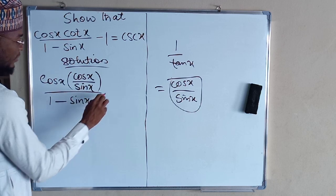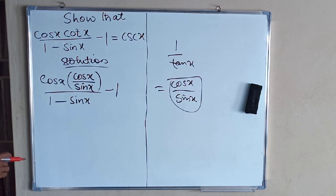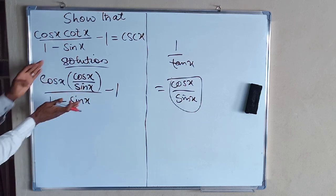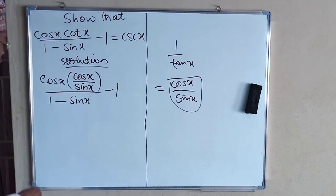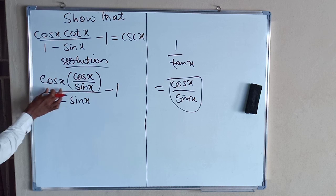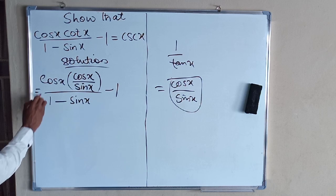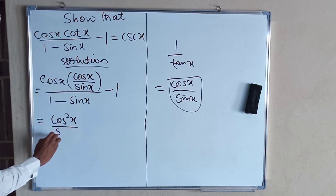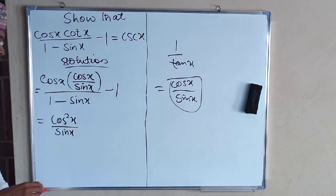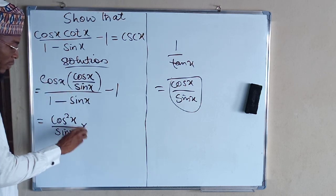So we now have cos(x) multiplied by cos(x)/sin(x), all divided by one minus sin(x), minus one. This is what we have from the left-hand side, and we need to prove it equals the right-hand side. We open the bracket by multiplying cos(x) with cos(x)/sin(x), giving cos²(x) divided by sin(x).